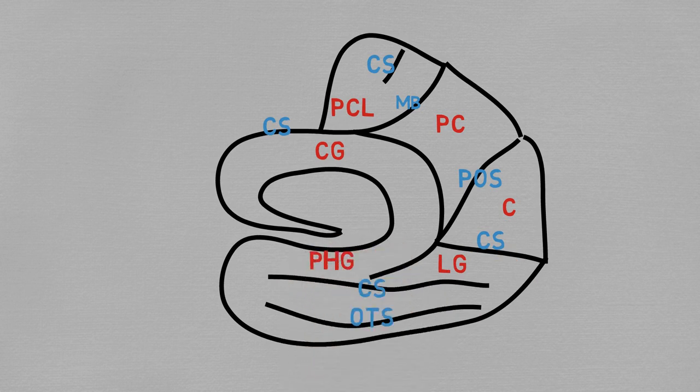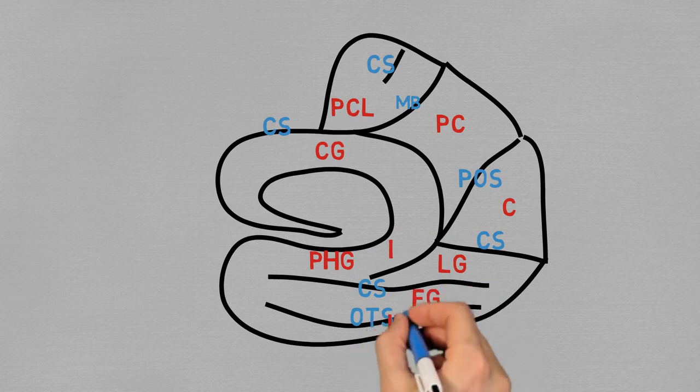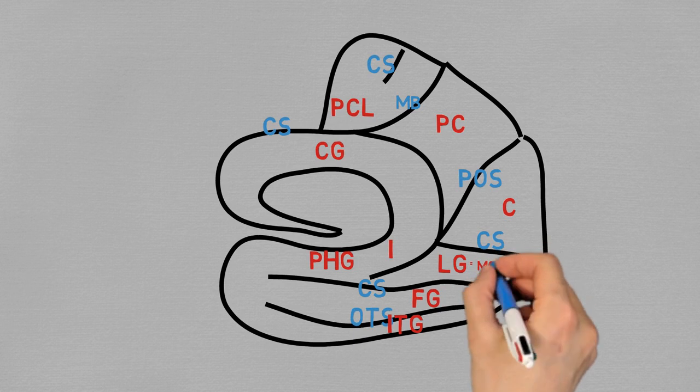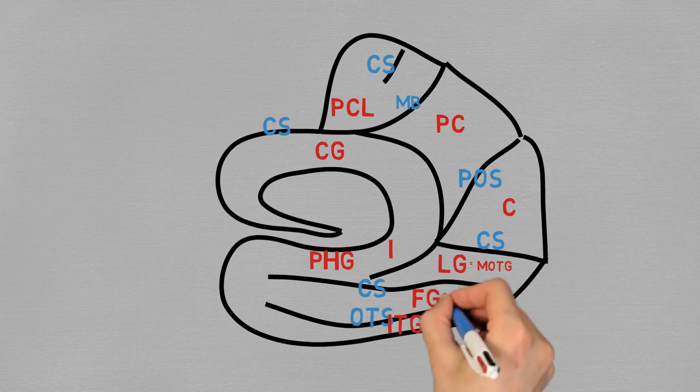The parahippocampal gyrus is also continuous with the cingulate gyrus, by means of the isthmus, which means connection. Below the lingual gyrus lies the fusiform gyrus, or spindle-shaped, and below it is the inferior temporal gyrus, which also appears on the lateral surface of the brain. This pair of gyri here is sometimes referred to as medial occipital temporal gyrus, and lateral occipital temporal gyrus, depending on which text you're following.